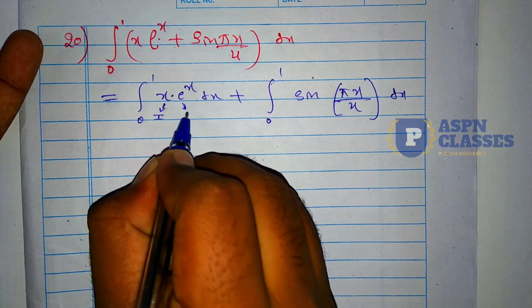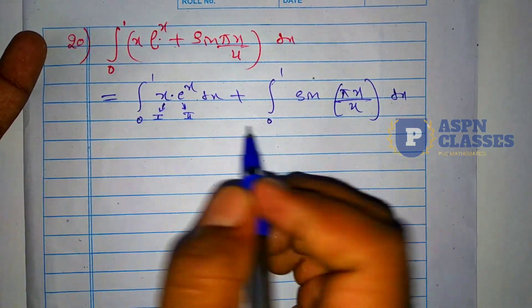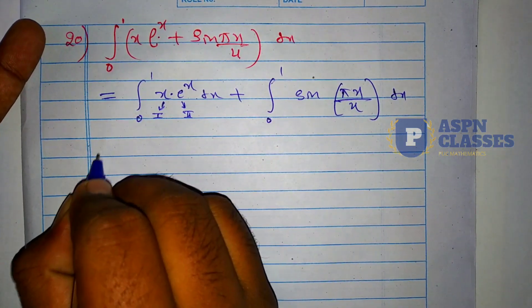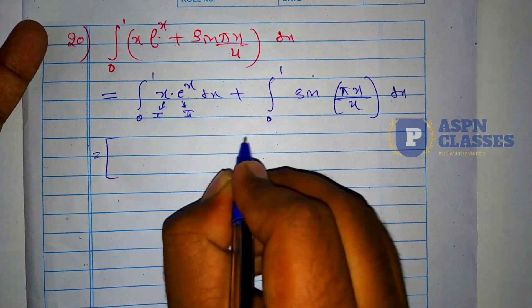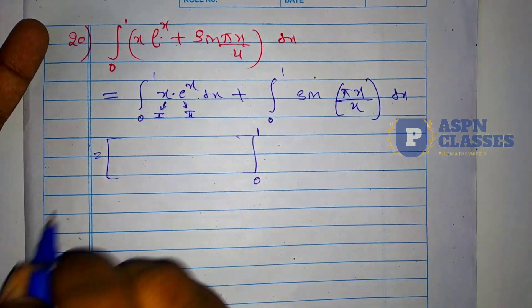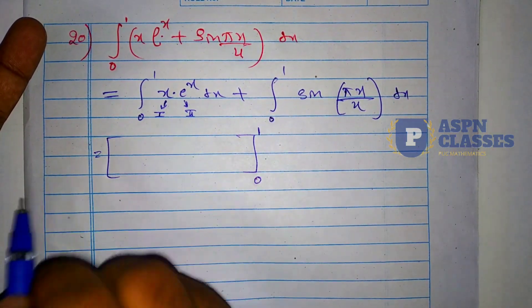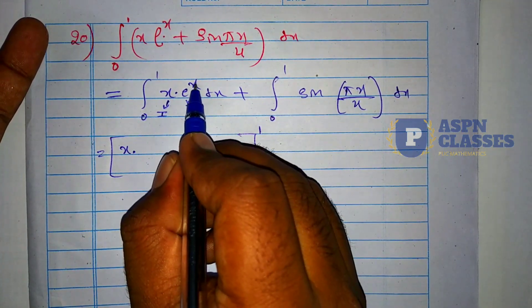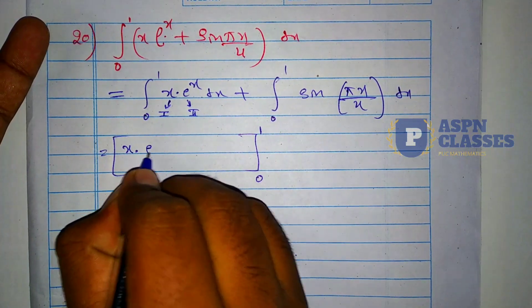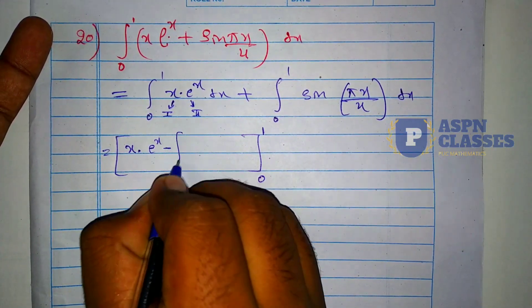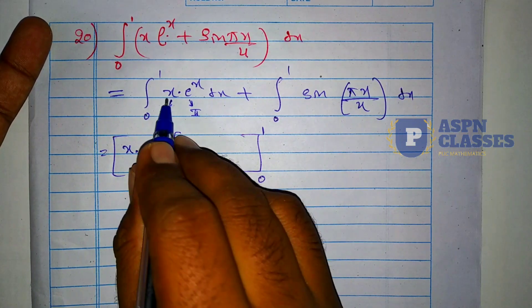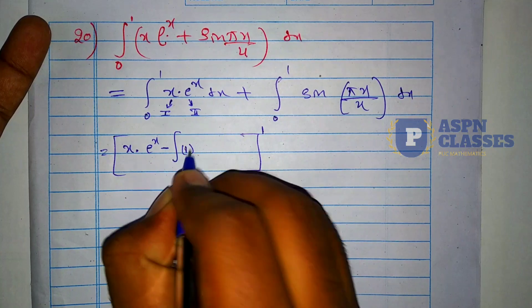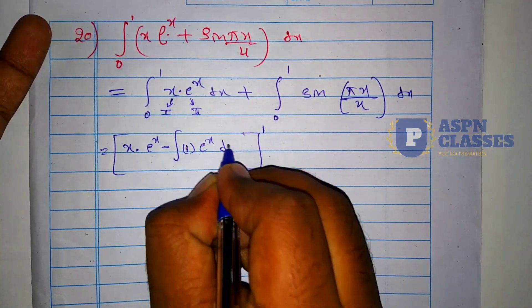For integration by parts: x is the first function and eˣ is the second function. The formula gives: x·eˣ minus integral of (1·eˣ)dx, which equals x·eˣ - eˣ. For the sin(πx/4) part, integration of sin gives minus cos, so we get minus cos(πx/4), and we must divide by the inner derivative π/4, giving -(4/π)·cos(πx/4). The limit is 0 to 1 throughout.